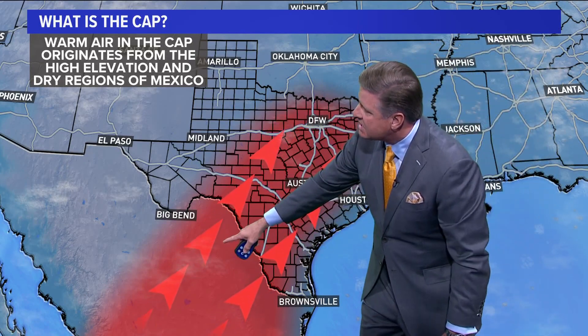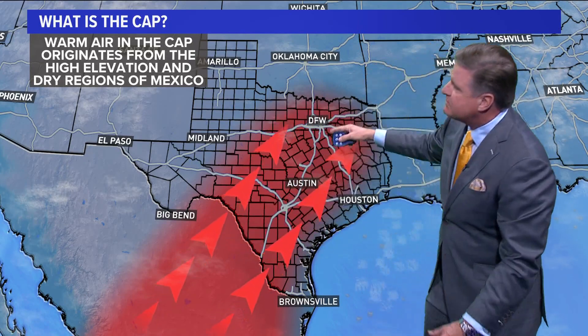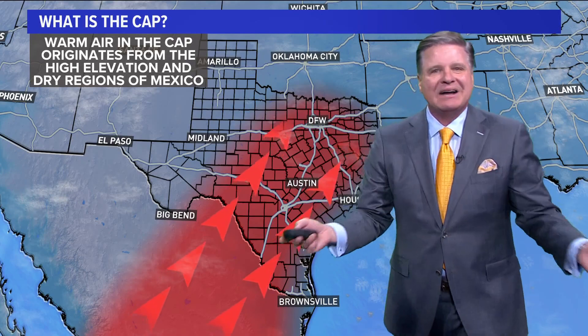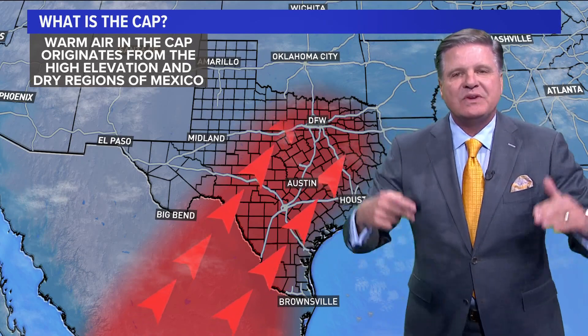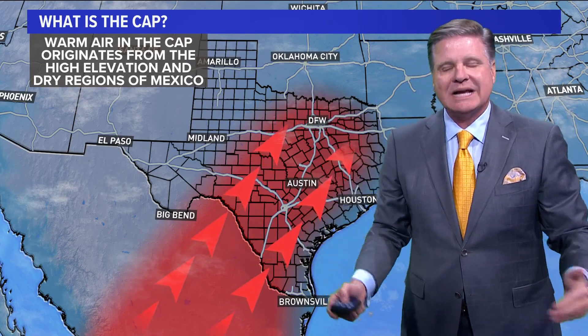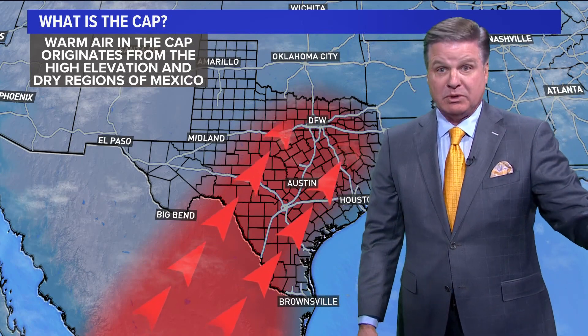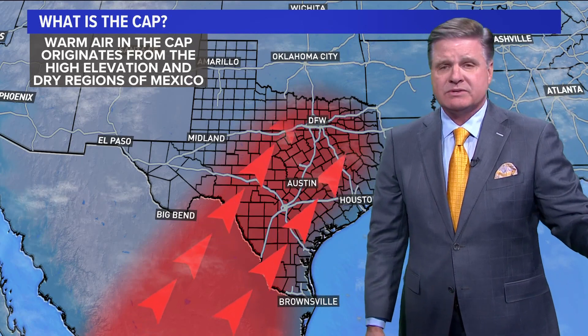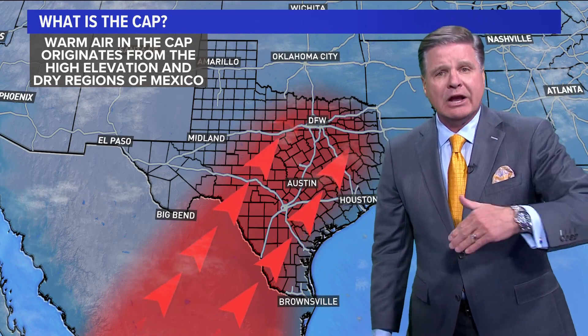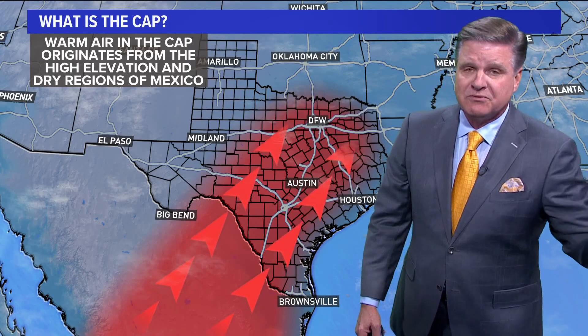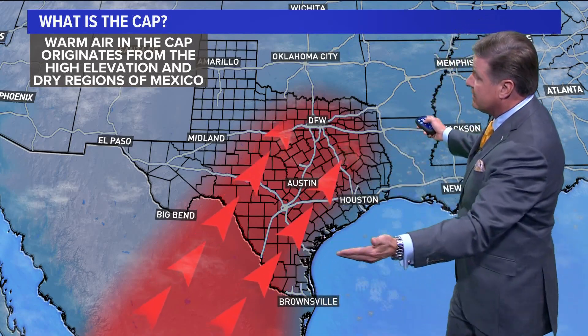So that warm air in the cap originates from the high elevation in the dry regions of Mexico. It's all blown up to the north. And by the time it arrives from here up to there, it's about 4,000 to 6,000 feet above the surface. It's really, really hard to detect. Balloons are sent up — weather balloons — the National Weather Service sends those up. Airplanes are taking observations as they're flying across the sky here in North Texas.